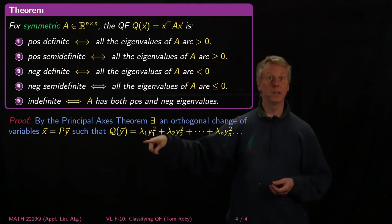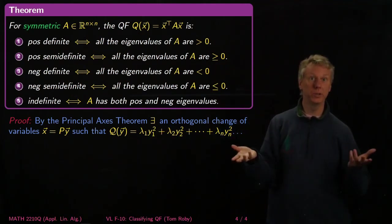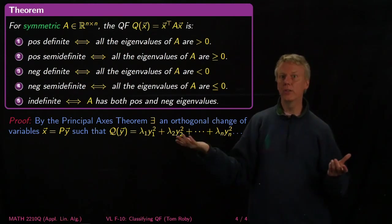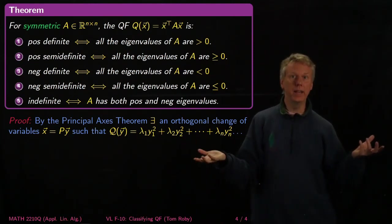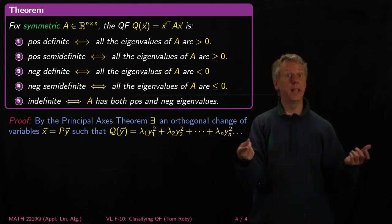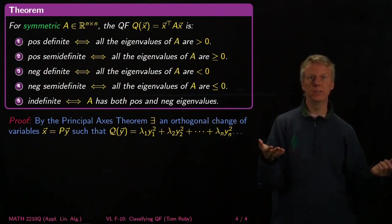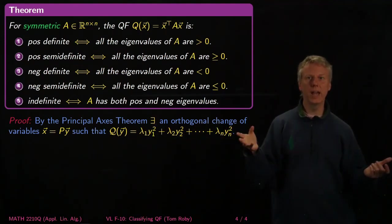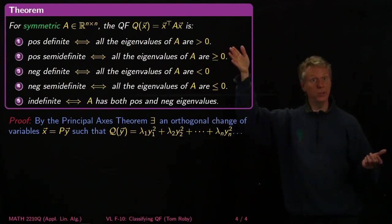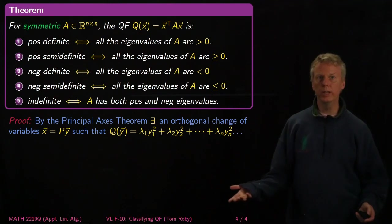Which means that we get a quadratic form that has the form lambda 1 y1 squared plus lambda 2 y2 squared plus lambda n yn squared. And that's great, because at that point you understand everything about it. If all of these eigenvalues are positive, then it's definitely positive definite. And if some are positive and some are negative, suppose that lambda 1 is positive, then I can definitely get positive values by plugging in y1 equals 1 and all the other yi's equal to 0.